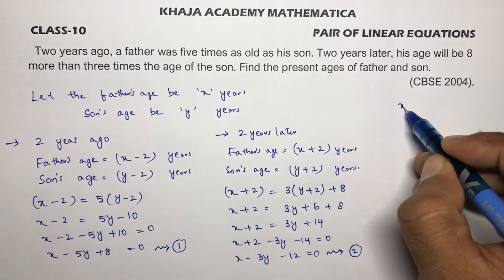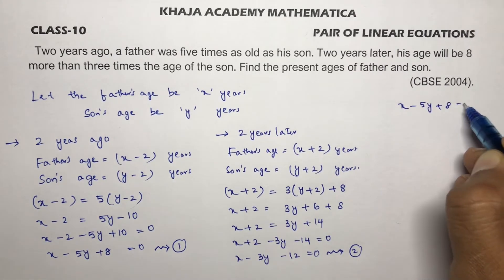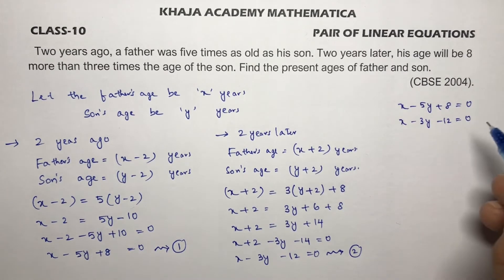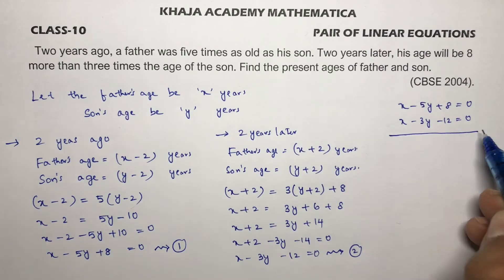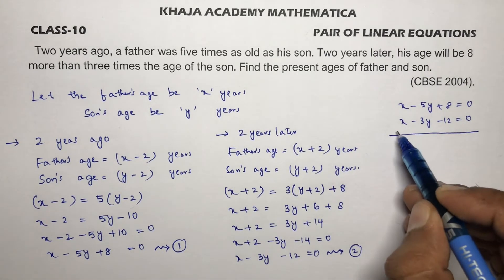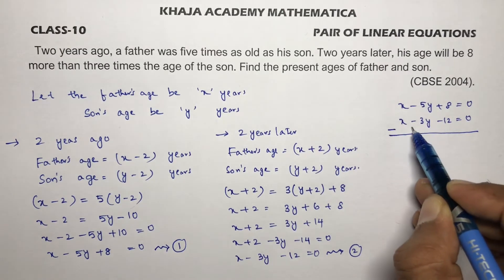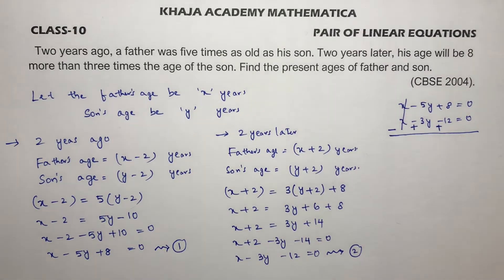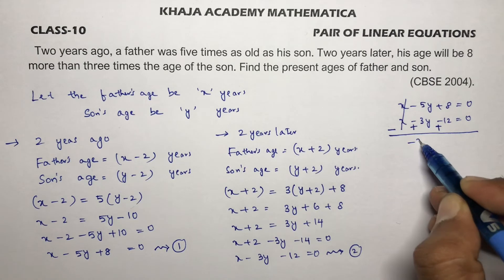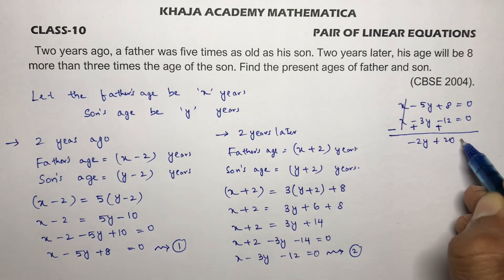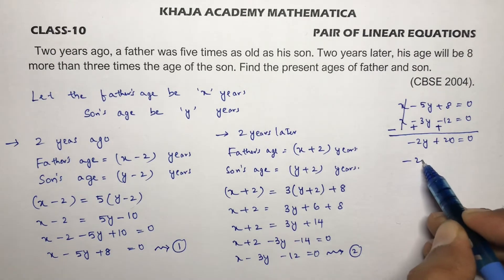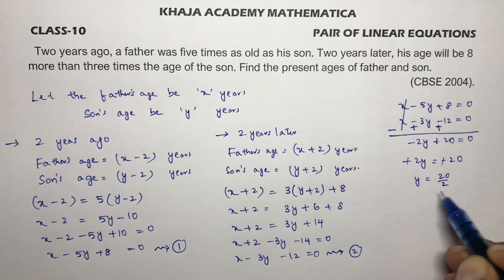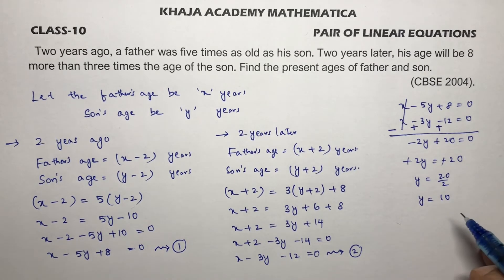Now solving these two equations using the elimination method: equation one is x minus five y plus eight equals zero, and equation two is x minus three y minus twelve equals zero. Subtracting equation two from equation one, x minus x cancels. Minus five y plus three y gives minus two y, and eight minus negative twelve gives plus twenty, so minus two y plus twenty equals zero. Therefore minus two y equals minus twenty, and y equals ten.